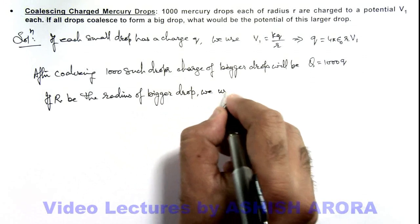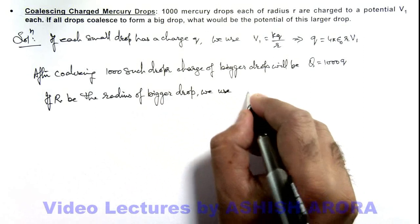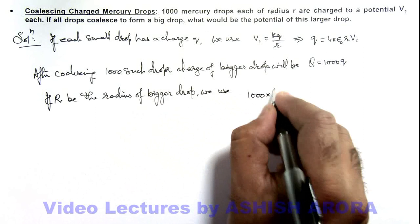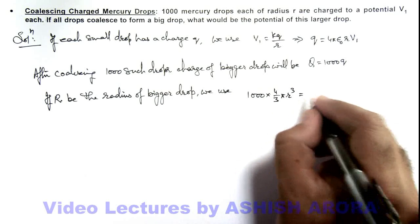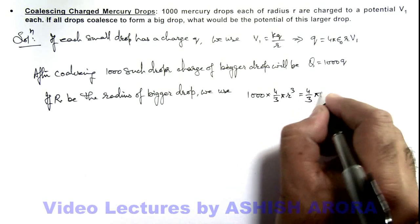By conserving volume: 1000 times 4/3πr³, the total volume of 1000 small drops, must equal 4/3πR³.